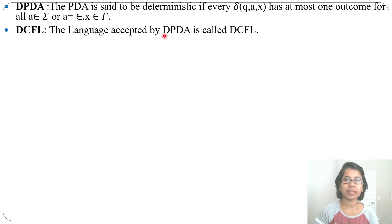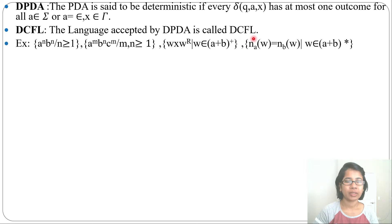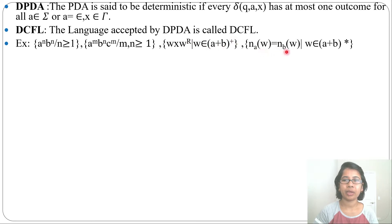The language accepted by a DPDA is called DCFL. Some examples of DCFL are: a^n b^n where n ≥ 1; a^m b^n c^m where m, n ≥ 1; w x w-reverse where w belongs to (a+b)+; and the language where the number of a's in w equals the number of b's. These are examples of deterministic context-free language, where for every input alphabet and topmost stack symbol there is at most one outcome.